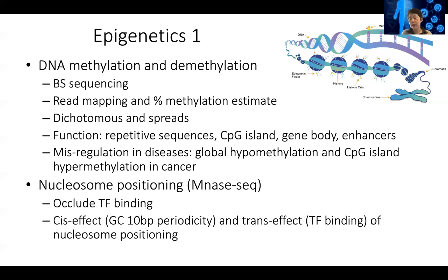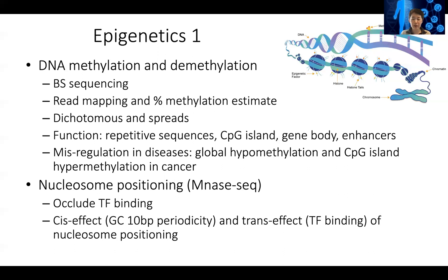Interestingly, for gene bodies, we see that highly expressed genes sometimes have their gene body methylated, which prevents the polymerase from starting from the wrong place — ensuring it correctly starts at the transcription start site and then elongates across the gene body. Enhancers can also be methylated, and when an enhancer has DNA methylation, transcription factors often cannot bind to that region. In general, DNA methylation suppresses binding and suppresses gene expression.